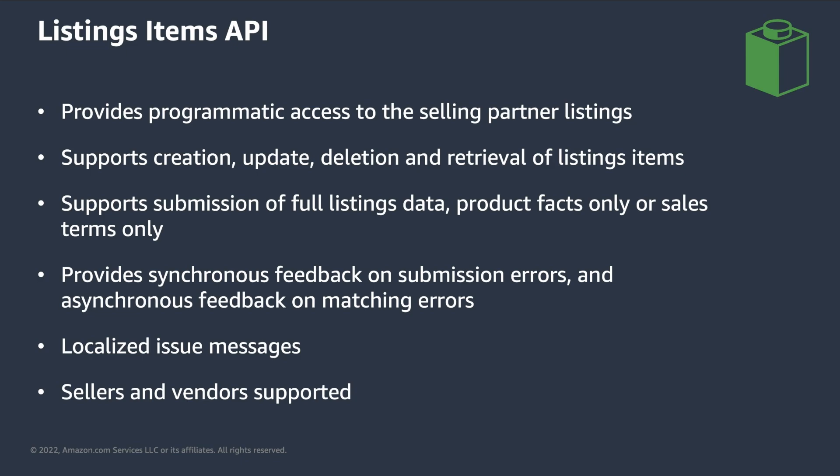We now arrive at what is probably the most relevant building block: the Listings Items API. With it, you can create, update, delete, and retrieve selling partners' listings. Use cases like creating variations and pack-hierarchy relationships are also supported. All of this is done in combination with the schemas vended by the Product Type Definitions API. The Listings Items API supports the submission of full listings data, but it is also possible to submit just product facts or sales terms. This is particularly useful for data validation, since you can create listings that don't go live by specifying product facts only.